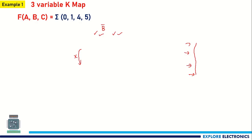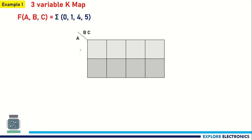In this example, the three variable expression is summation 0, 1, 4, 5. To write the K-map for this three variable, we need to take A vertically and BC horizontally.